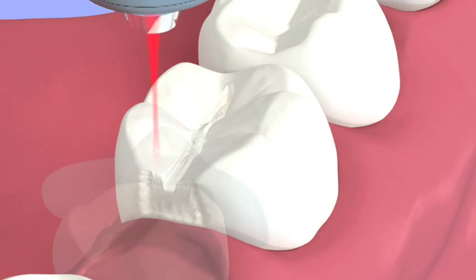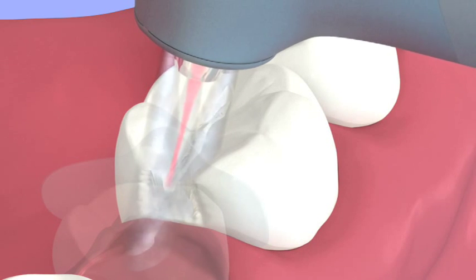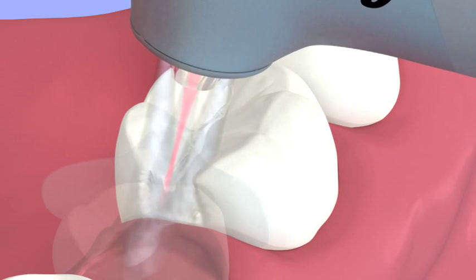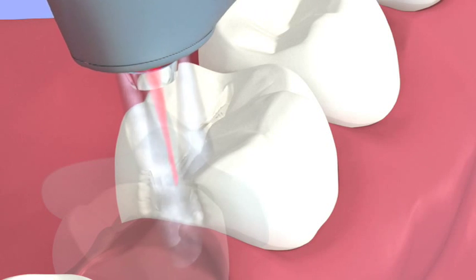To widen the preparation to reach the decay, use the handpiece at a slight angle. To transition from the interproximal to the occlusal surface, gradually slope around the cusp and then into the groove. Follow the same technique as described before.